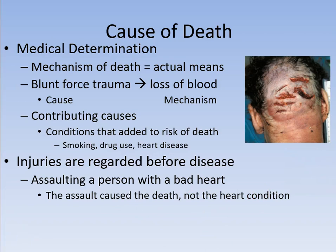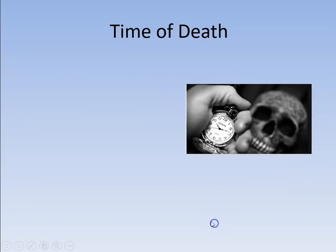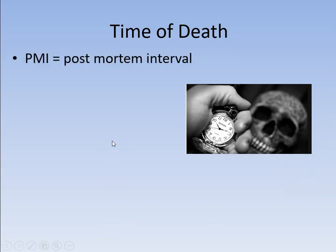So: manner of death is a legal term; cause of death is a medical term; the mechanism is what physically happened to the person which caused them to expire. That brings up the third category — time of death, otherwise known as PMI, post-mortem interval: the after-death time.